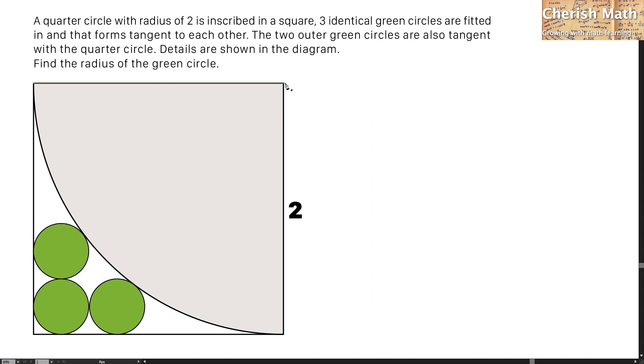I begin by drawing a straight line connecting from the center of the quarter circle to the center of this green circle located at the right side. Let the radius of the green circle be r. And for the length of the green line, that is going to be r plus the radius of the quarter circle which is 2 here.